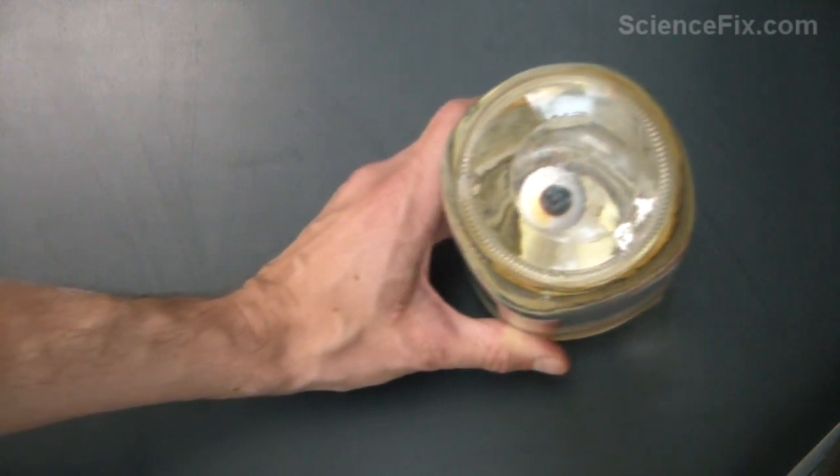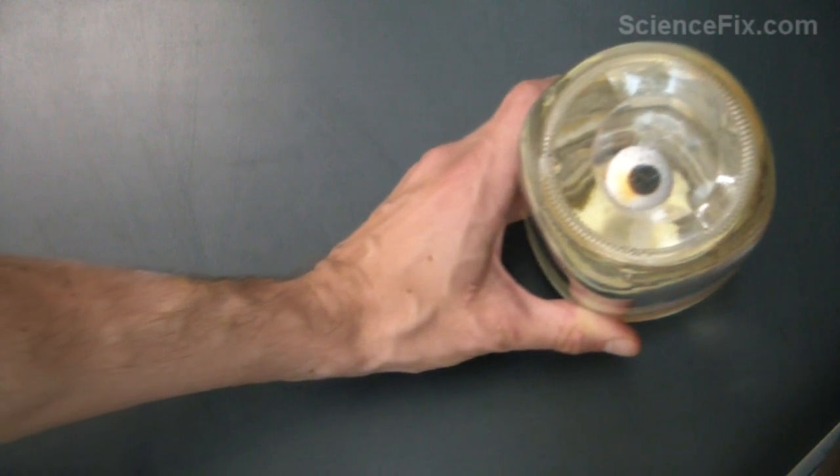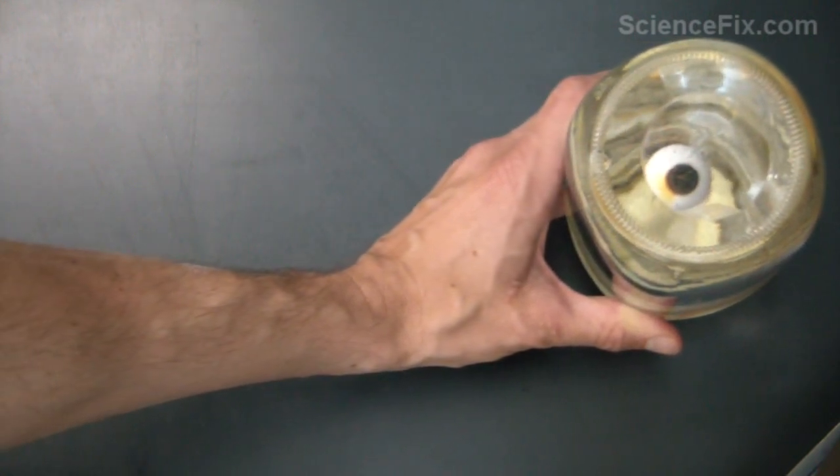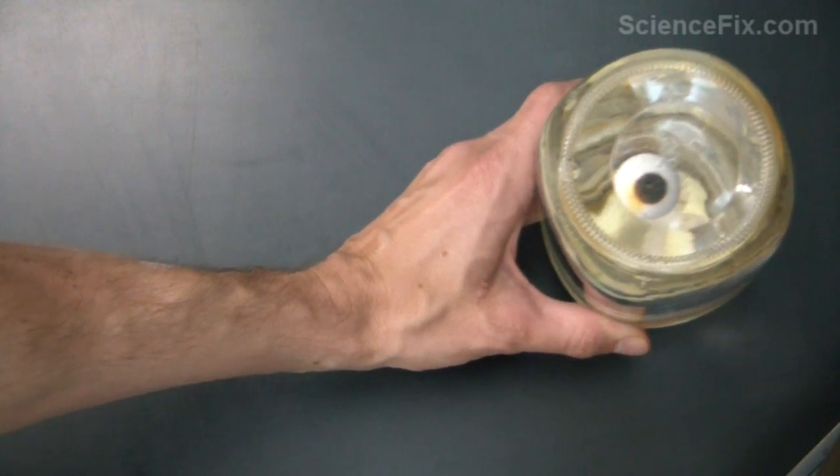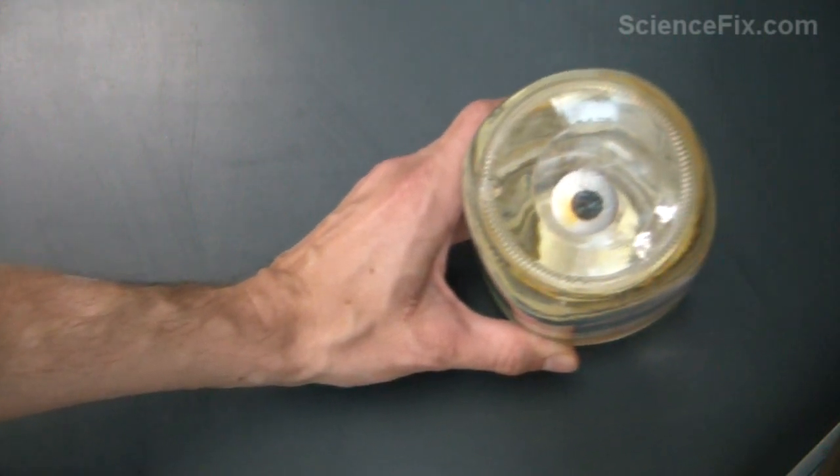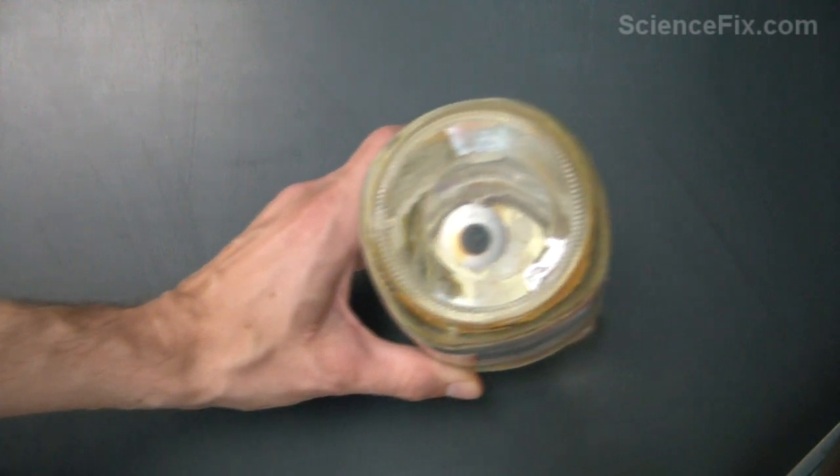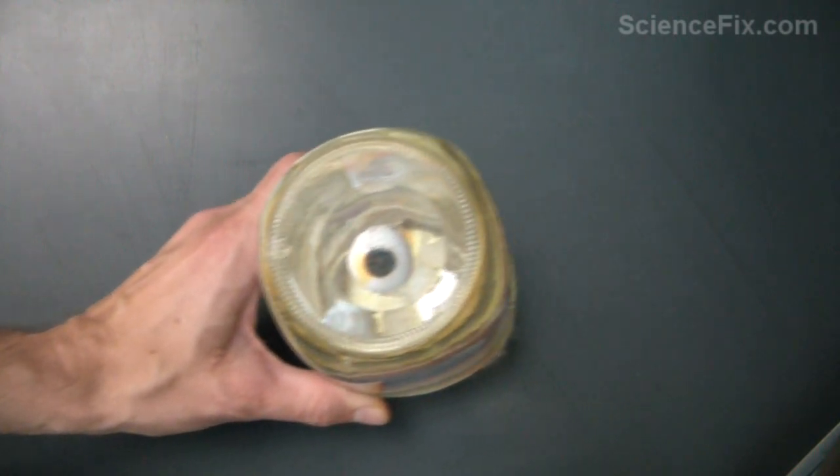So that is constant velocity, no change in speed or direction. That's because the forces that are involved are all in balance. It's not perfect. That's why the bobber changes position slightly.